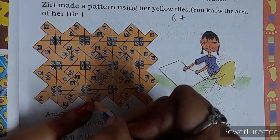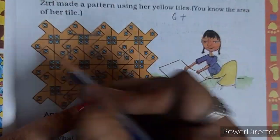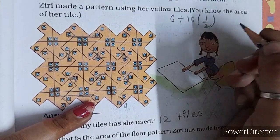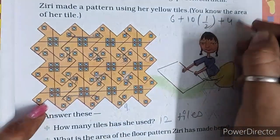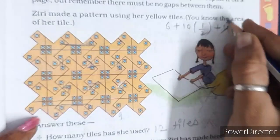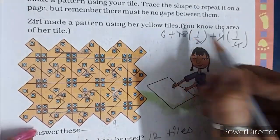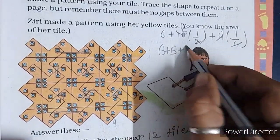1, 2, 3, 4, 5, 6, 7, 8, 9, 10. 10 half lee hai. 1, 2, 3, 4. 4 quarterly lee hai. 6 plus 5, 11 plus 1, 12.